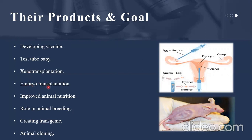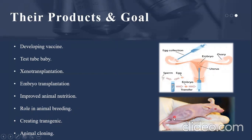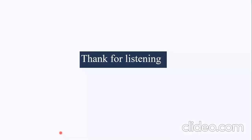The fourth product is embryo transplantation, and the fifth is improved animal nutrition. We improve the nutrition of animals by making different genetic changes through animal biotechnology. Another key role of animal biotechnology is creating transgenic animals so that we can perform different experiments and develop different products. As you can see here, one example is the growth of an ear on a mouse, which relates to xenotransplantation. Thank you for listening.